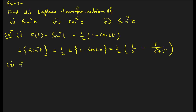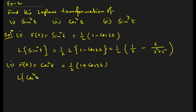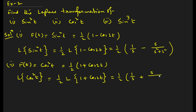Similarly, for cos²(t), we use the identity cos²(t) = (1/2)(1 + cos(2t)). The Laplace transformation of cos²(t) is (1/2) times the Laplace of [1 + cos(2t)], which equals (1/2)·[1/s + s/(s²+4)].